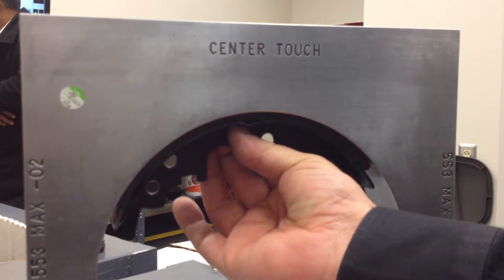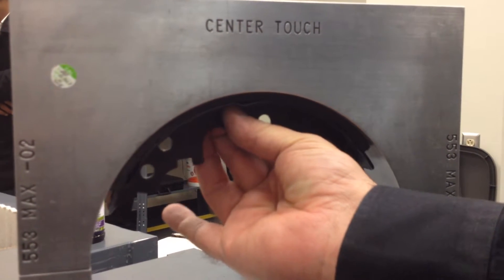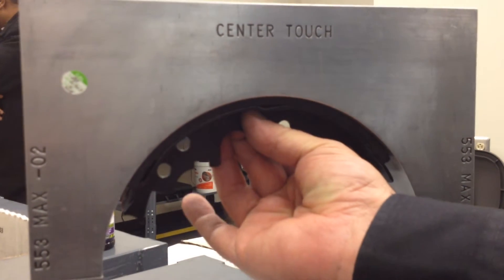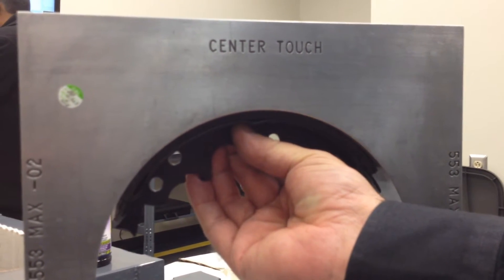The ends of the shoe are ground thinner than they should be, but it's still going to touch in the center. So that center touch gauge is still going to check good.